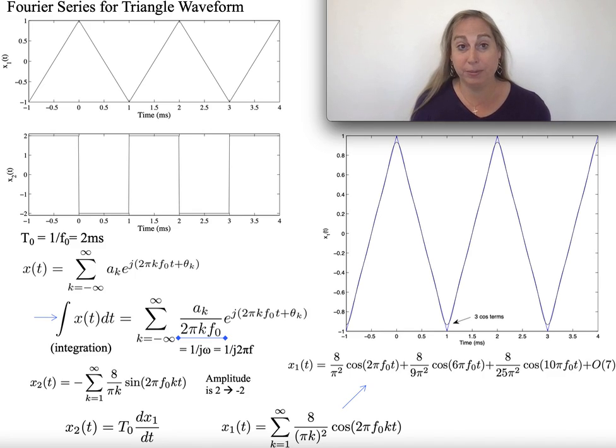I'd like to do a Fourier series problem, and in particular, I'd like to look at one for a triangle waveform. A triangle waveform like I would see up here for this x1, where I certainly see it's increasing up to 1 at time equals 0 milliseconds, 1 millisecond back down to minus 1 and so forth.